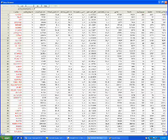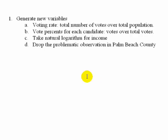Looking at our notes for today, the first things we're doing is getting our dependent variables ready. We're going to generate new variables for the voting rate and also generate a variable for the percent of the voting rate for each particular candidate. While dealing with this early data manipulation, we're also going to take the natural log of income. Then the last data preparation step is dropping that problematic Palm Beach County.